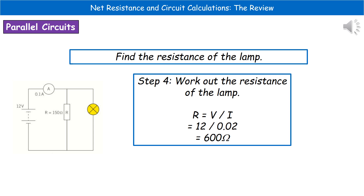The last step is to find the resistance of the lamp. The potential difference stays the same in any loop — so it's 12 volts — and we've just found the current through the lamp loop is 0.02 amps. Using R = V ÷ I: 12 divided by 0.02 gives us a lamp resistance of 600 ohms.